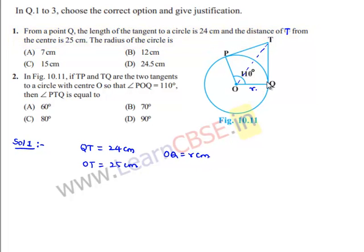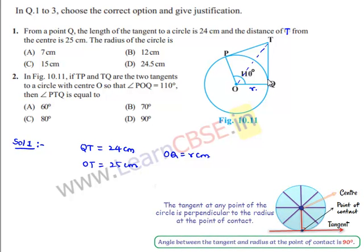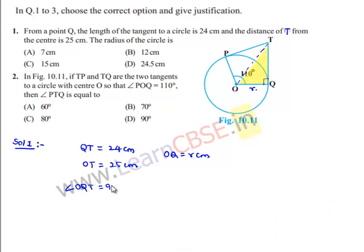We know that a tangent to a circle is always perpendicular to the line joining the center and that point. Therefore, angle OQT = 90 degrees, and OQT is a right triangle. By applying the Pythagoras theorem: